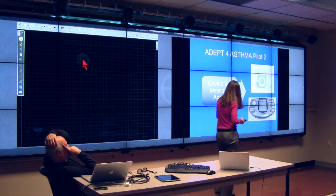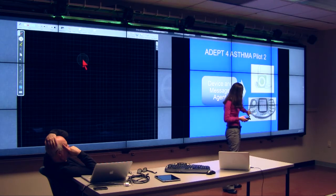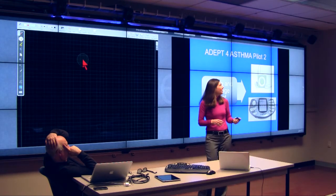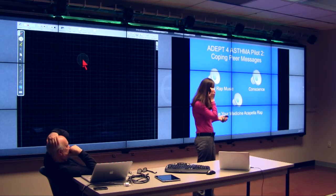So we've gone from this Nokia N-Gage cell phone that the kids called a taco, big and not very sleek, to the iPod shuffle, and the coping peer groups for them to record the messages.